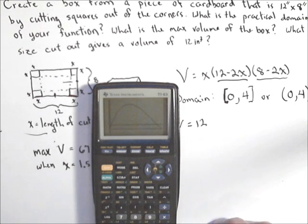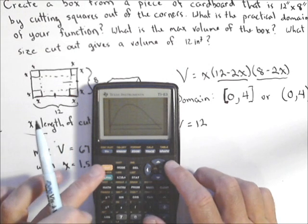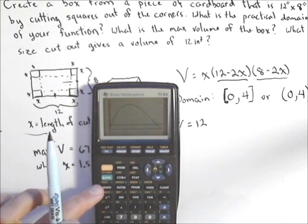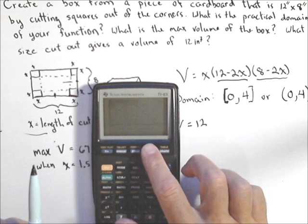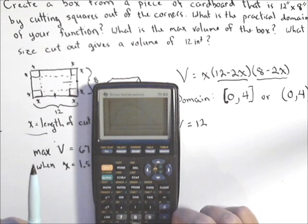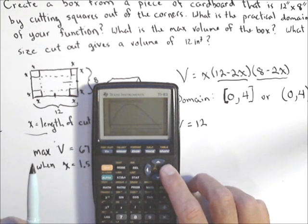I actually have two places where the volume of the box would be 12 inches. So there's actually two answers. Now what we're calculating are intersection points. So I'm going to go second, calculate, intersect, number five, and it's going to do first curve and second curve. We just need the two curves. The one you go closer to is the one you'll get.